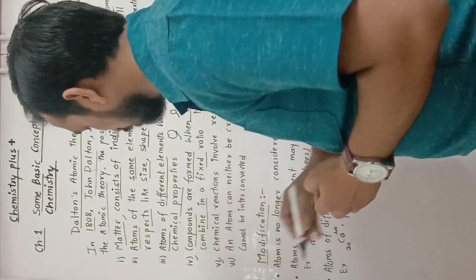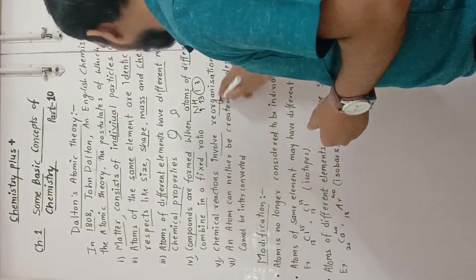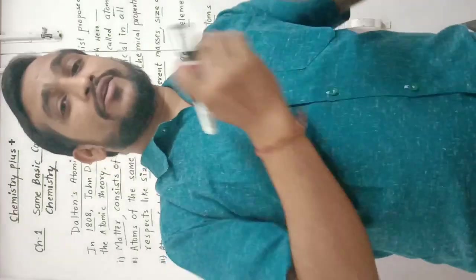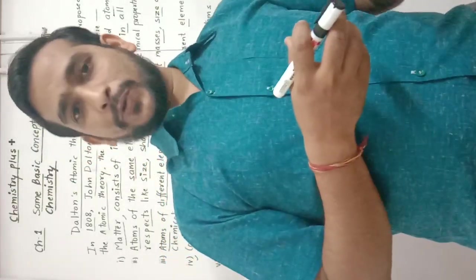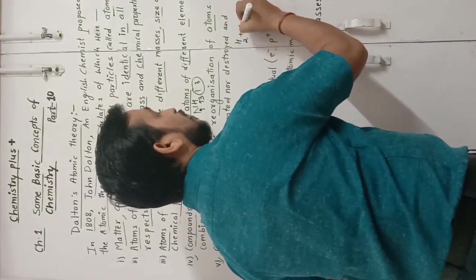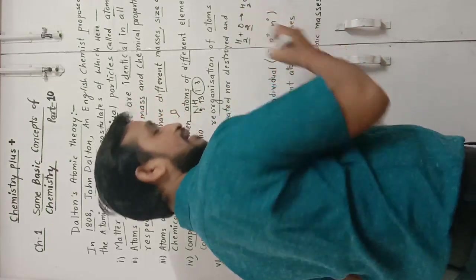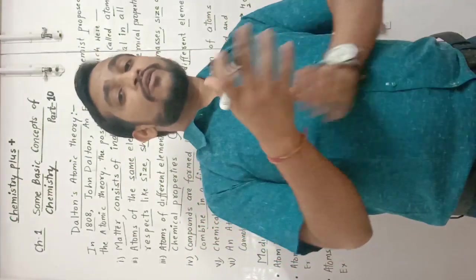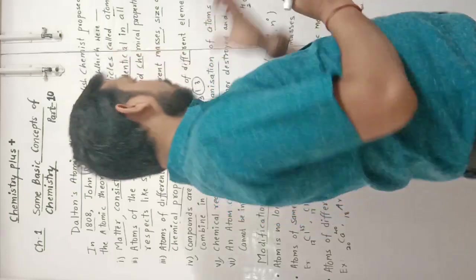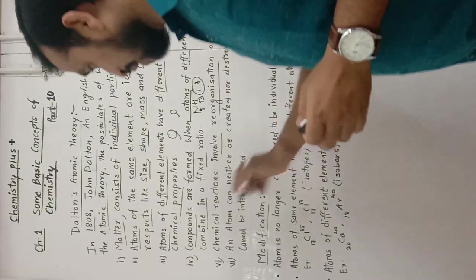The fifth postulate is: chemical reactions involve reorganization of atoms. Whenever a chemical reaction proceeds, it includes the recombination of various atoms to form new compounds. For example, hydrogen and oxygen atoms are reorganized to form a new compound — water.